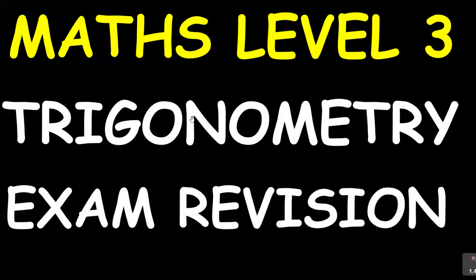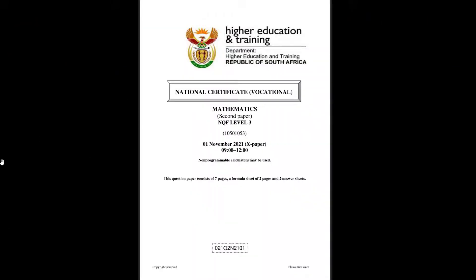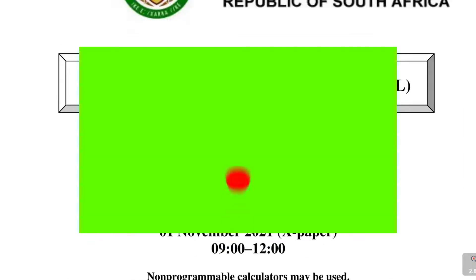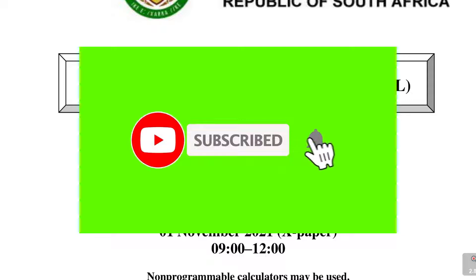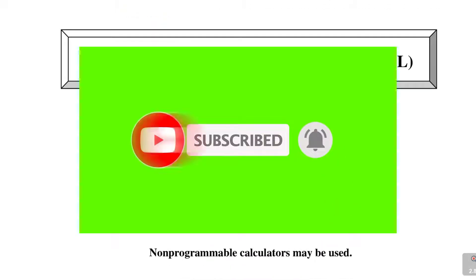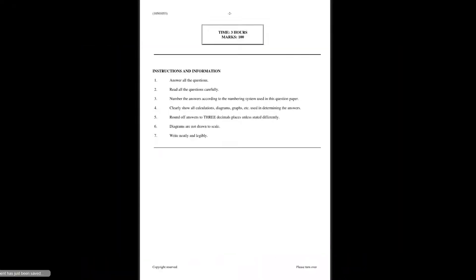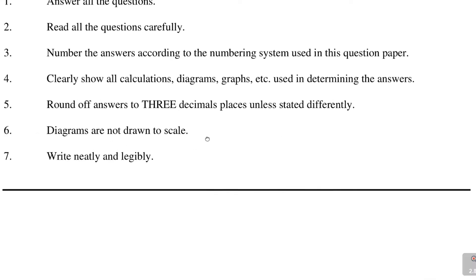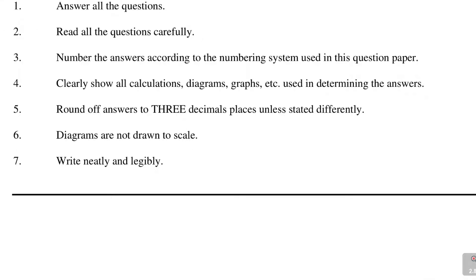And this is trigonometry. We are continuing looking at this paper, which was written in November 2021. This is for the National Certificate in Vocational NCV. The second paper is what I'm looking at. And I have already noted that they say round off the answers to the nearest three decimal places.